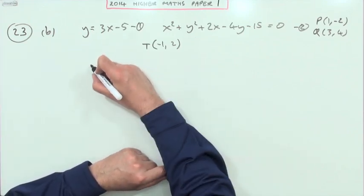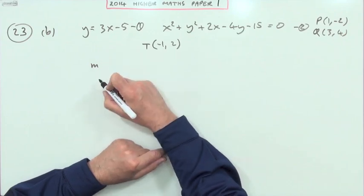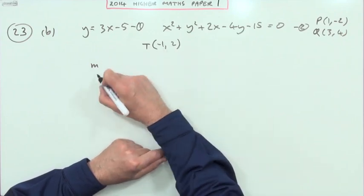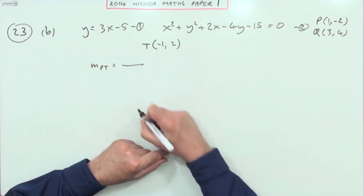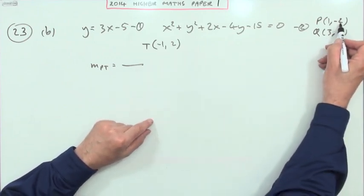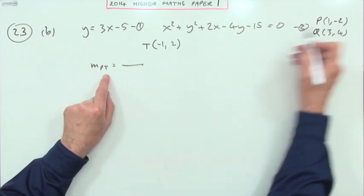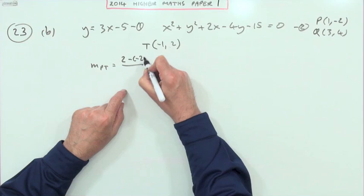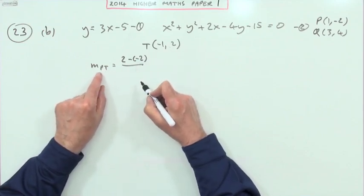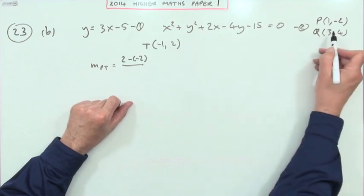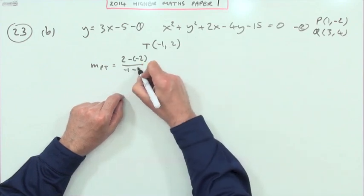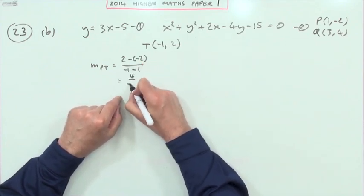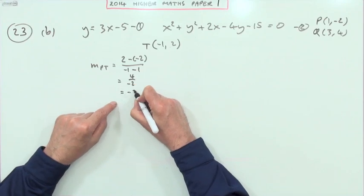I'll just use gradients here. I think it's probably quicker using the scalar product, but I've seen that appearing in so many other questions. So it says show that PT—the gradient of PT—well PT means I'm going from—no, sorry—2 take away negative 2. I know it doesn't make any difference strictly speaking, but I prefer to do in the order of where you start to where you finish. 2 take away negative 2 over negative 1 take away 1, so that's 4 over negative 2, which is negative 2.